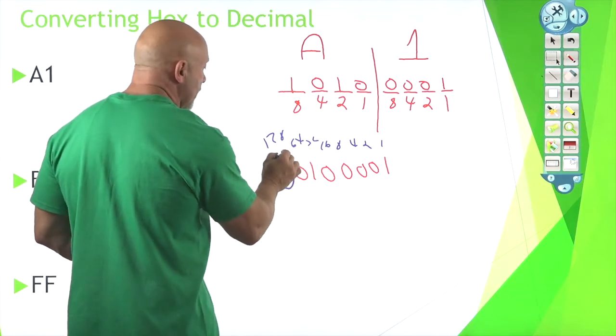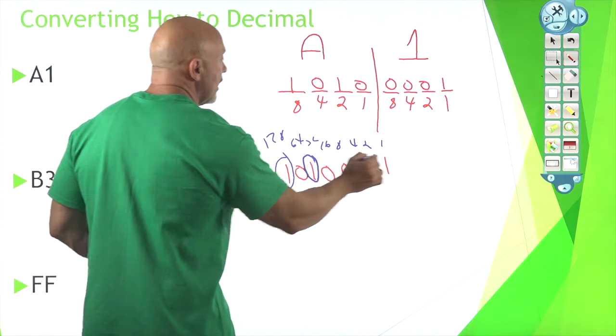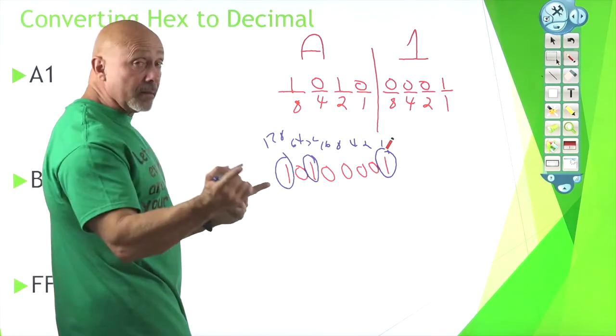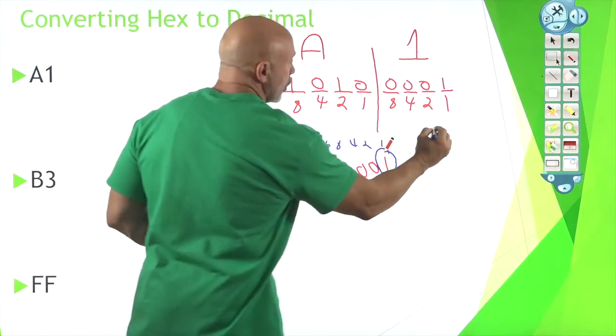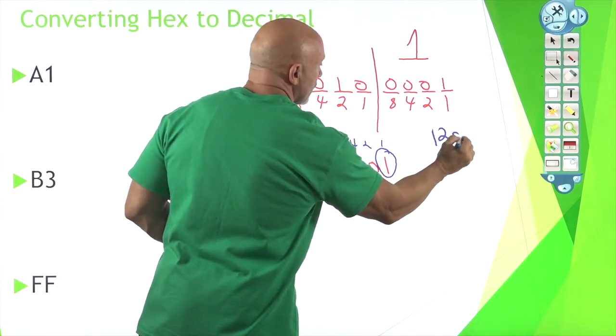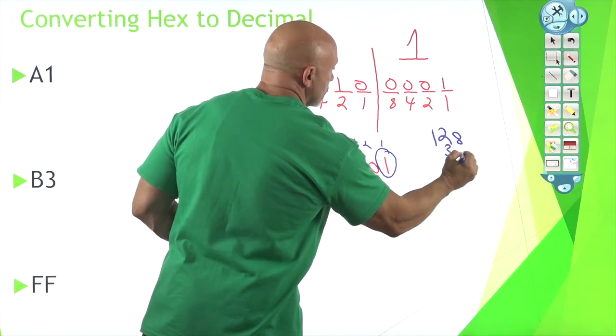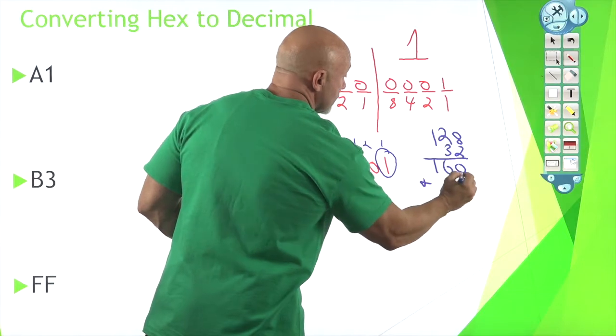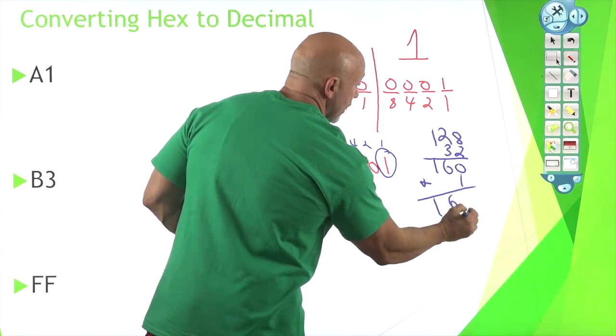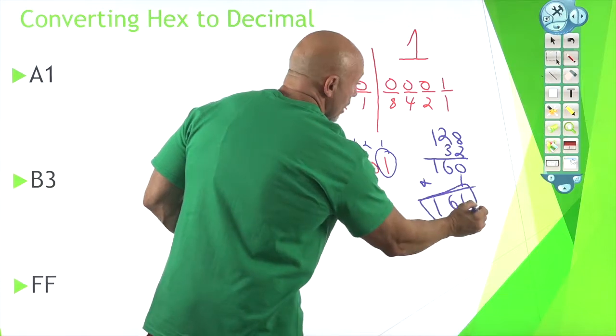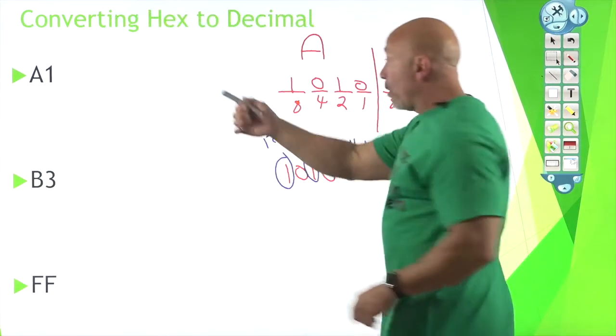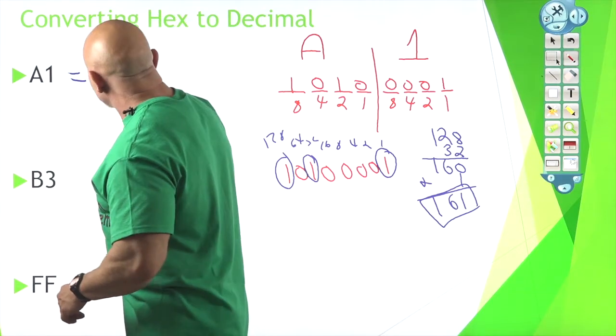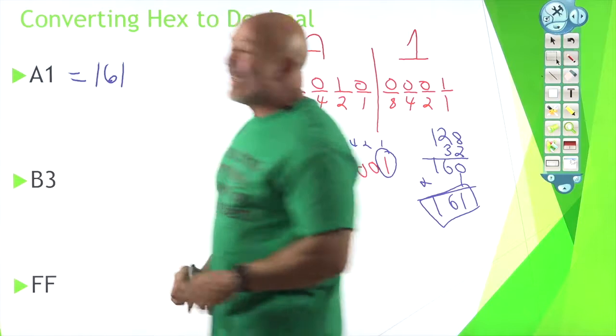So what do we need to add? We need to add the 128, the 32, and this little number one right here. Okay, all those three numbers we need to add because they're on. So 128 plus 32 is 160, plus one is 161. So A1 has an equivalent of 161 in decimal.